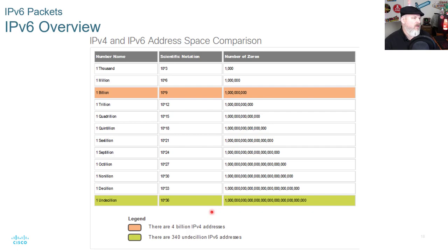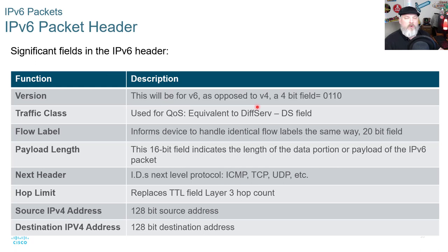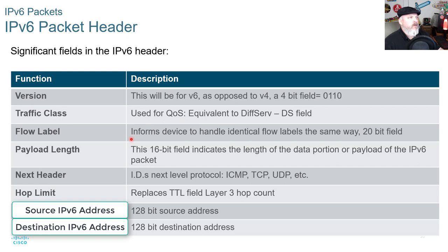Looking at the IPv6 packet header compared to IPv4: the V6 header is simplified but not smaller — it is fixed at 40 bytes or octets. Several V4 fields were removed to improve performance, including the flags, fragment offset, and header checksum. Significant fields in the V6 header include: version, which will be a 6 rather than a 4; traffic class, used for QoS; and the flow label, a 20-bit field that informs devices to handle identical flow labels the same way.